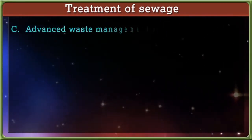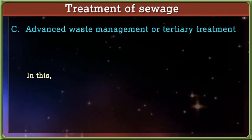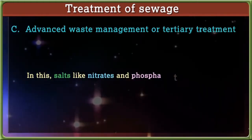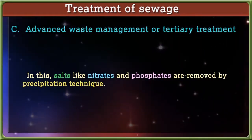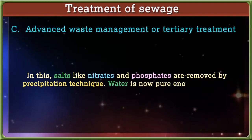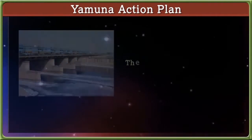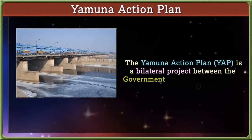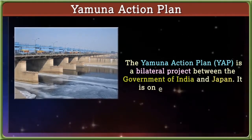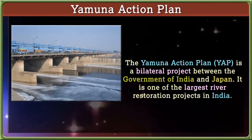C. Advanced waste management — Tertiary treatment: In this, salts like nitrates and phosphates are removed by precipitation techniques, and water is pure enough to drink. Yamuna Action Plan: The Yamuna Action Plan is a bilateral project between the government of India and Japan. It is one of the largest river restoration projects in India.